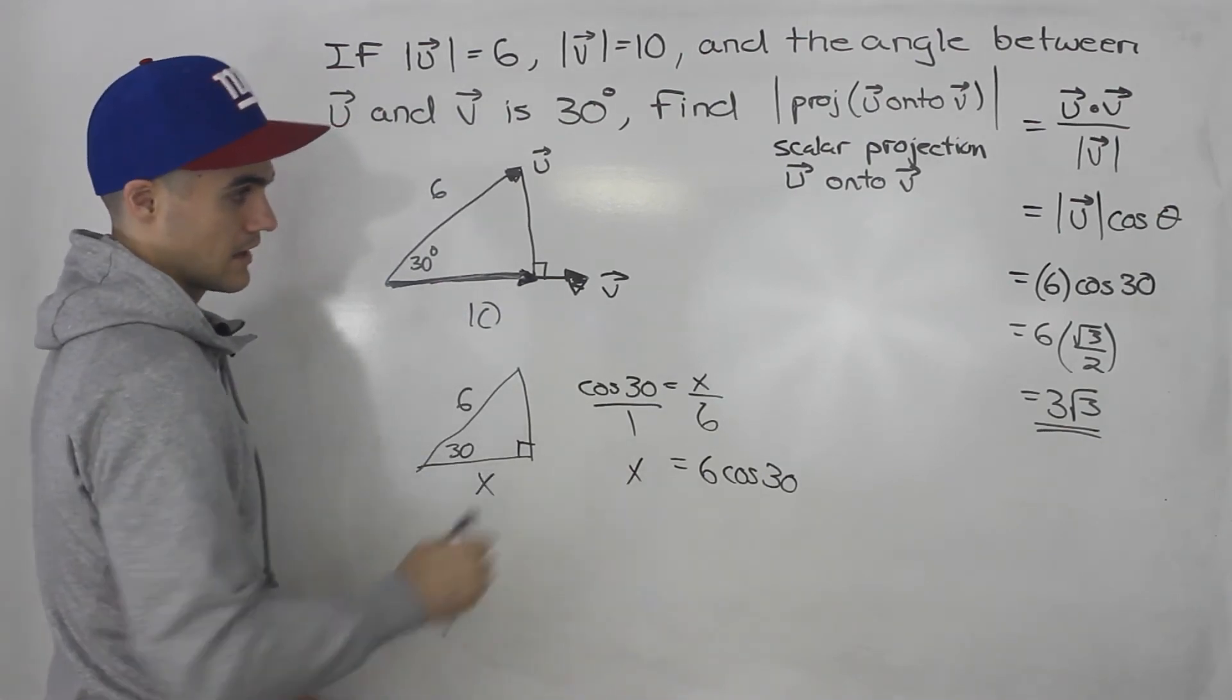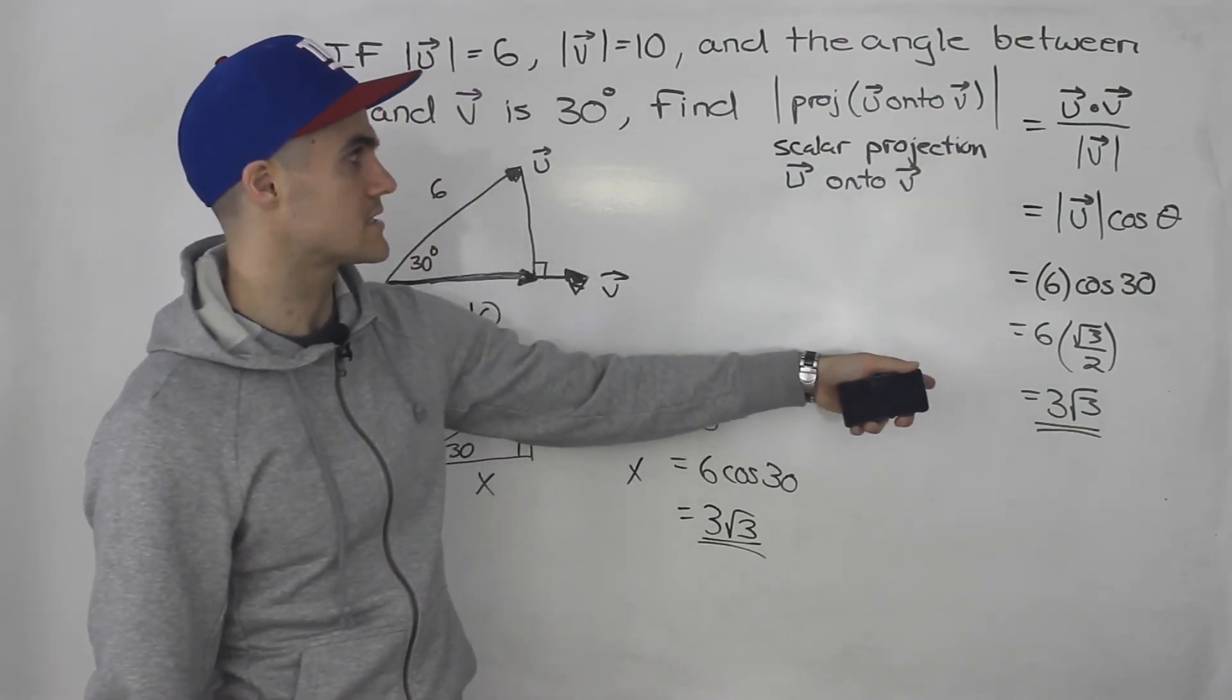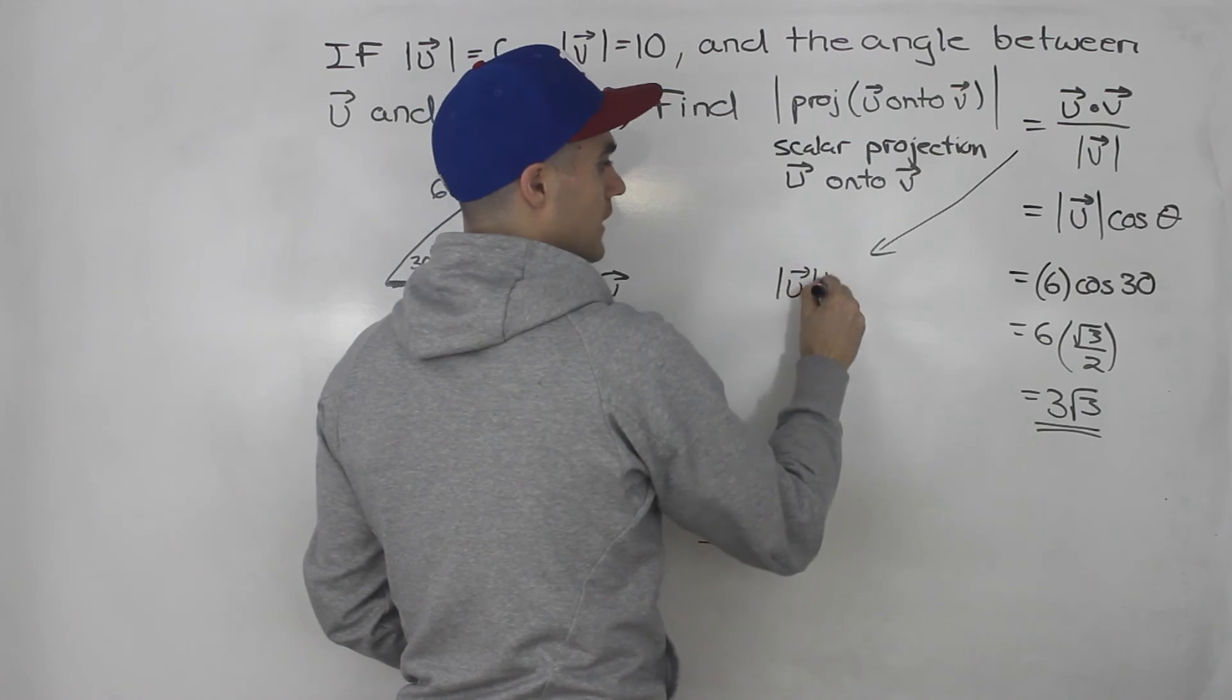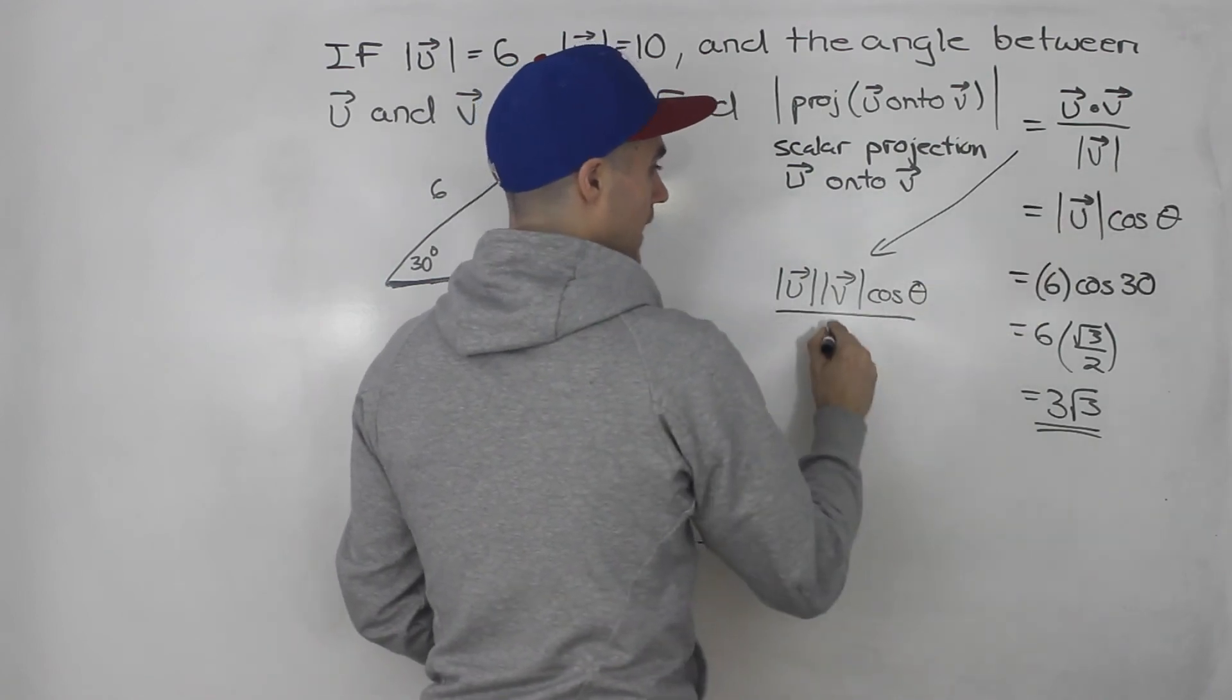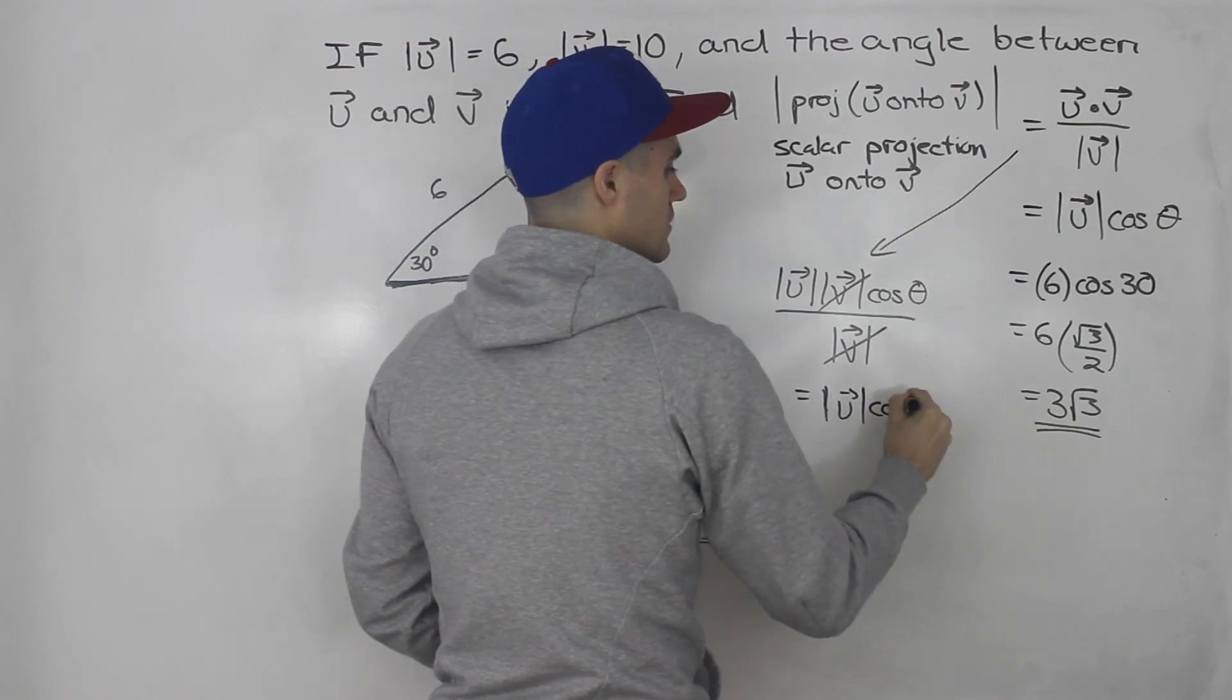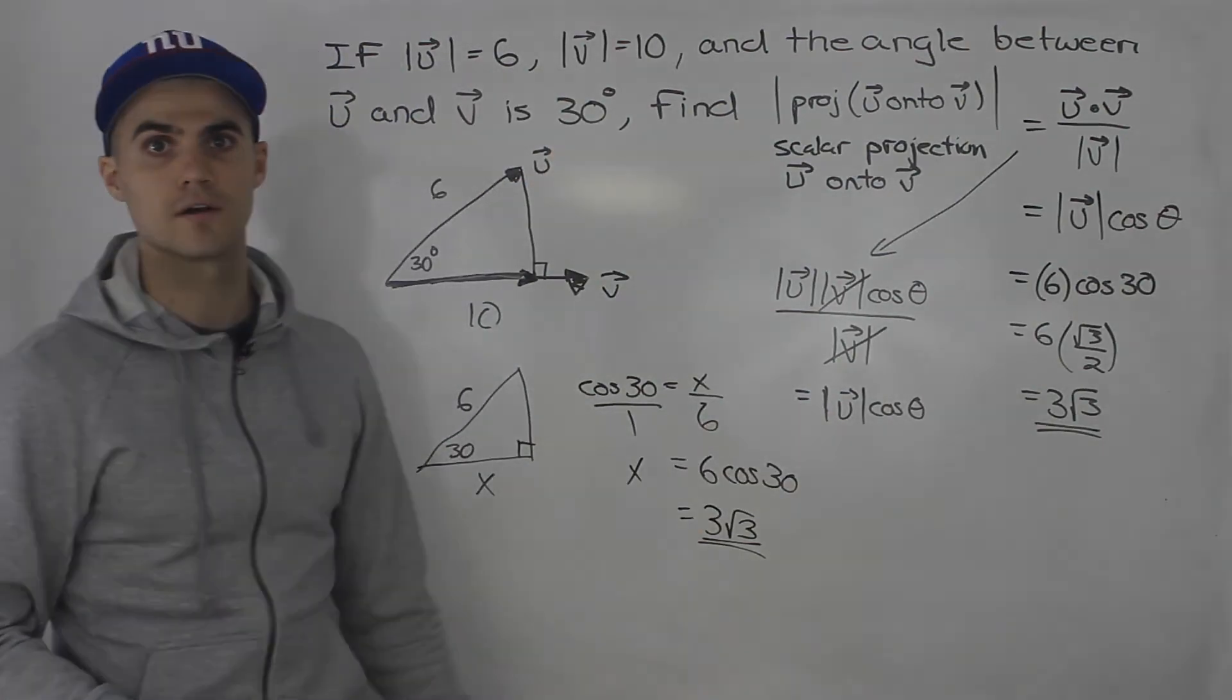And when you do that, you end up getting that same value, 3 root 3. So finding the scalar projection, you can use either formula. But in this case, we use this one. This formula is actually derived from this one. You can easily derive it. So u dot v, we know it's the magnitude of u times the magnitude of v, times cos of the angle in between them, all over the magnitude of v. Well, notice that v is going to cancel out. And we're just going to be left with u, the magnitude of u times cos theta. And we are given the magnitude of u, we're given the angle in between, so we can just plug it into that simple formula right there.